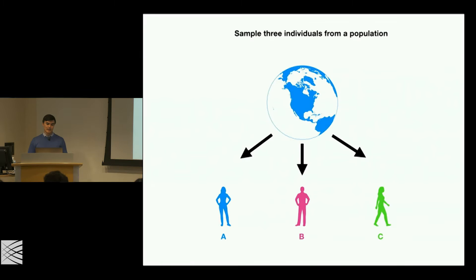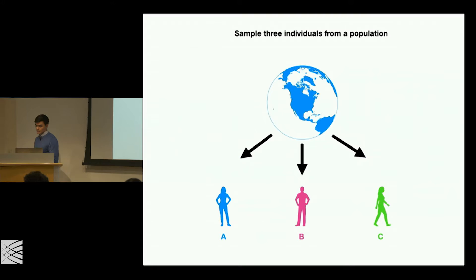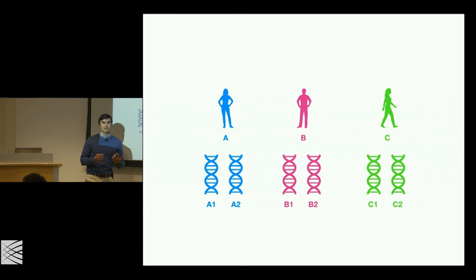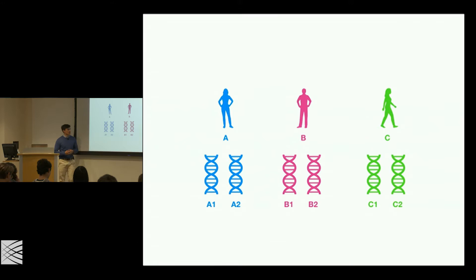Let's talk about tree sequences, starting with something familiar. Say we have a population of interest and we want to sample some genetic material. We pick three people — call them A, B, and C. People are diploid, and let's say the material we get is phased, so we know which allele belongs to which chromosome. For one individual, A, we have a maternal and paternal chromosome, same for B and C. So we have three individuals with six chromosomes.